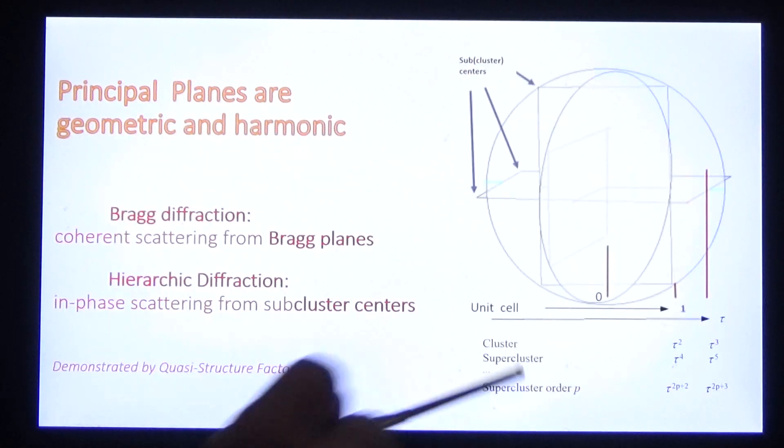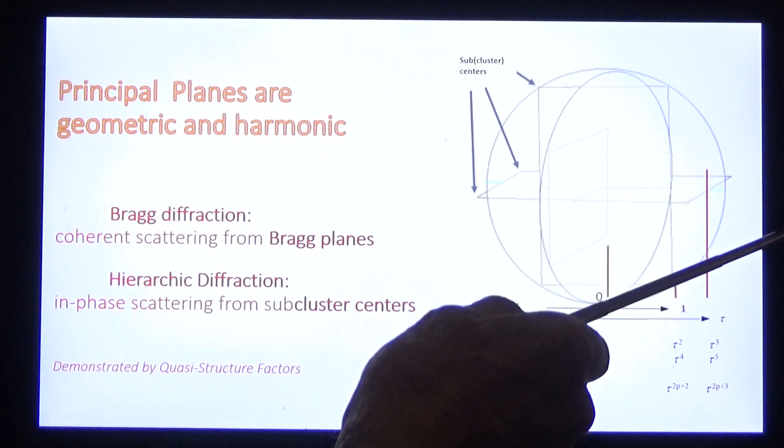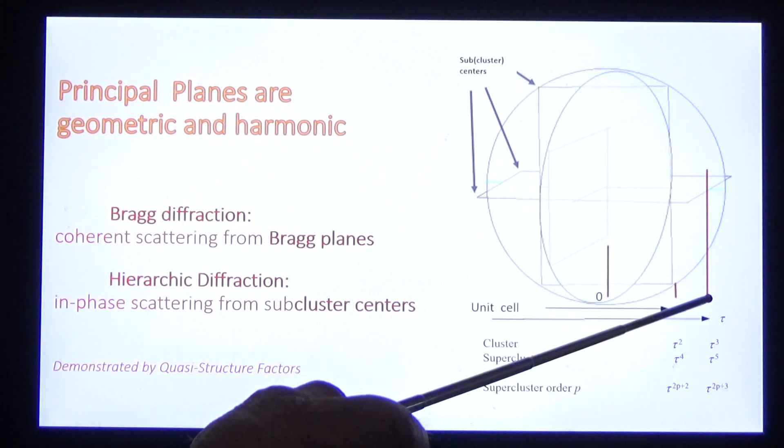So what is the metric? First, let's think about the diffraction. The golden triad applies to the unit cell, the cluster, the supercluster, and higher orders with scaling. And in each dimension, they have three principal planes shown in red.